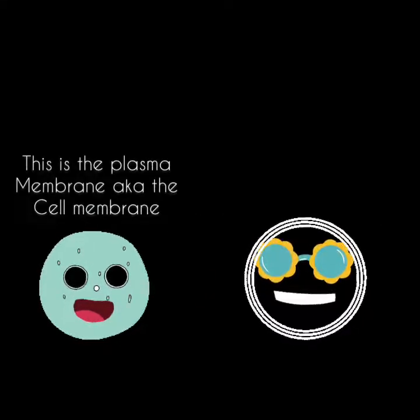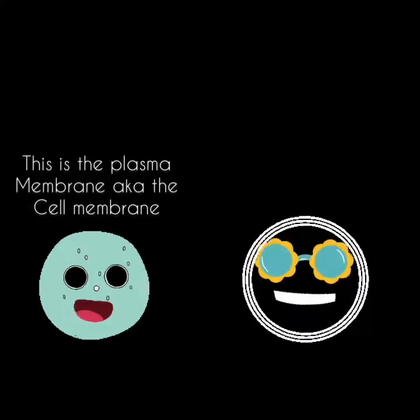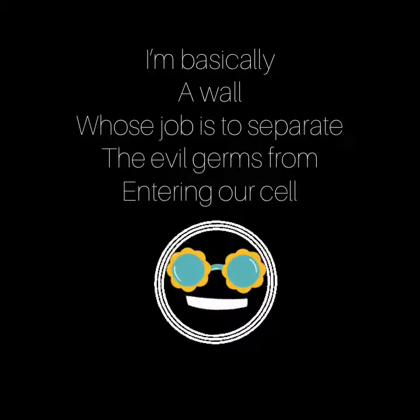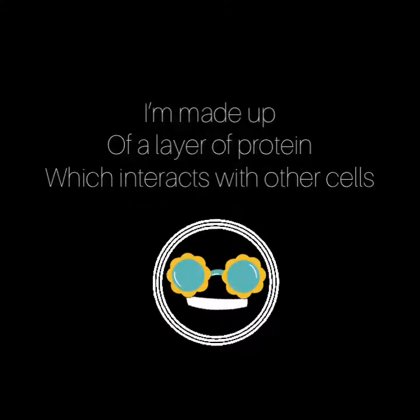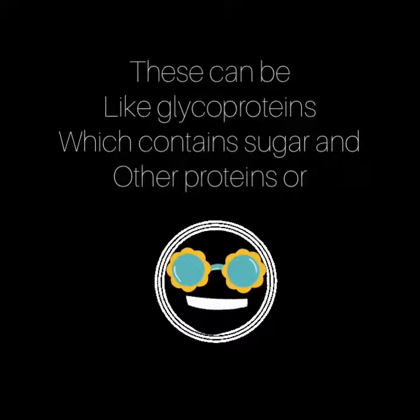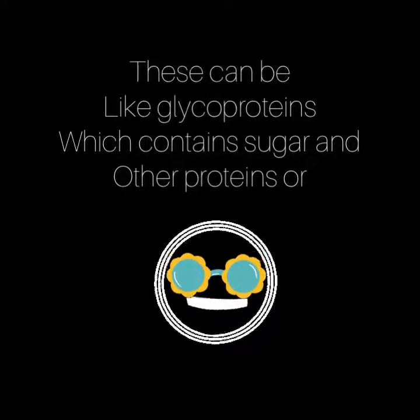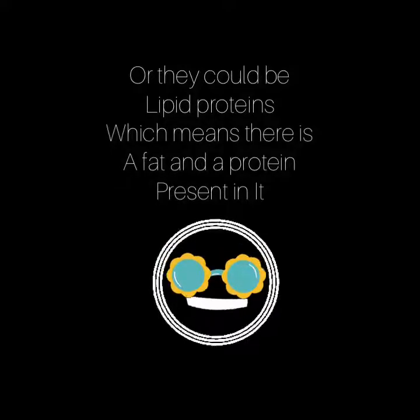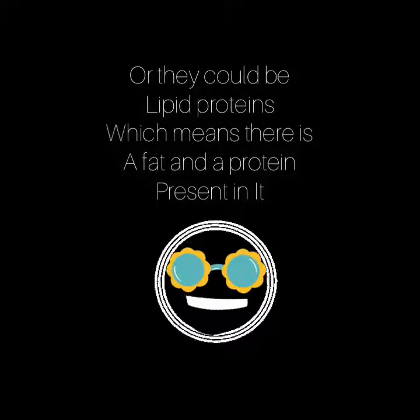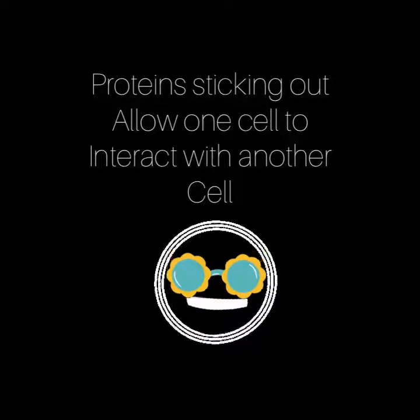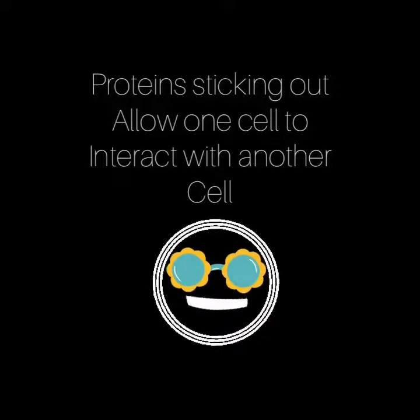This is the plasma membrane, also known as the cell membrane. I am basically a wall whose job is to separate the evil germs from entering our cell. I am made up of a layer of proteins which interact with other cells. These proteins can be glycoproteins, which contain sugar and other proteins, or they could also be lipid proteins — that means there is a fat and a protein present in it. Proteins allow for one cell to interact with another cell.